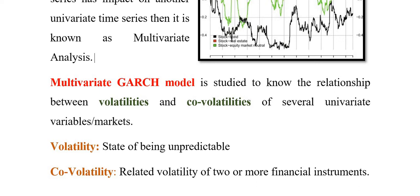For example, if we talk about the subprime mortgage — the US crisis in 2007-8 — when the US market went down, that change also affected other markets in the world. Or if there is volatility in foreign exchange, that can affect the stock market of that country or even other countries. This means the volatility of one company can affect the volatility of another company. This is also known as the spillover effect.